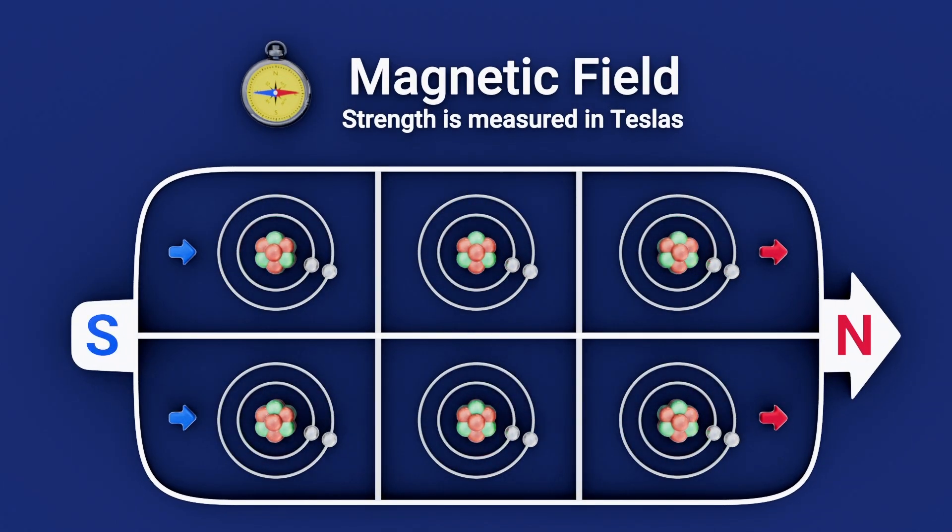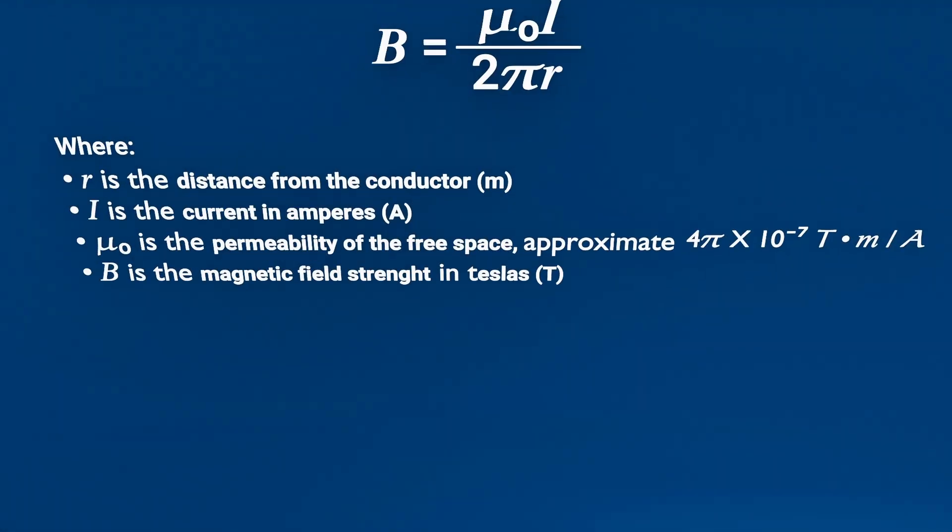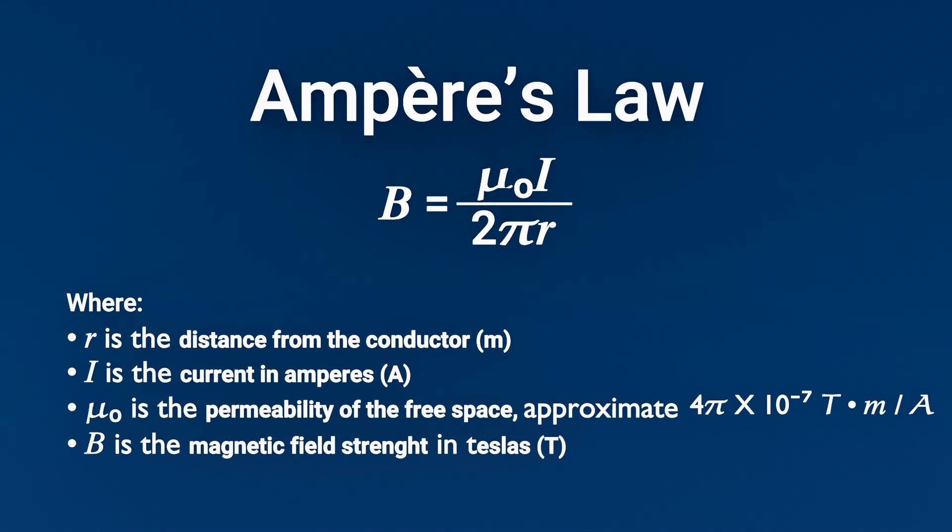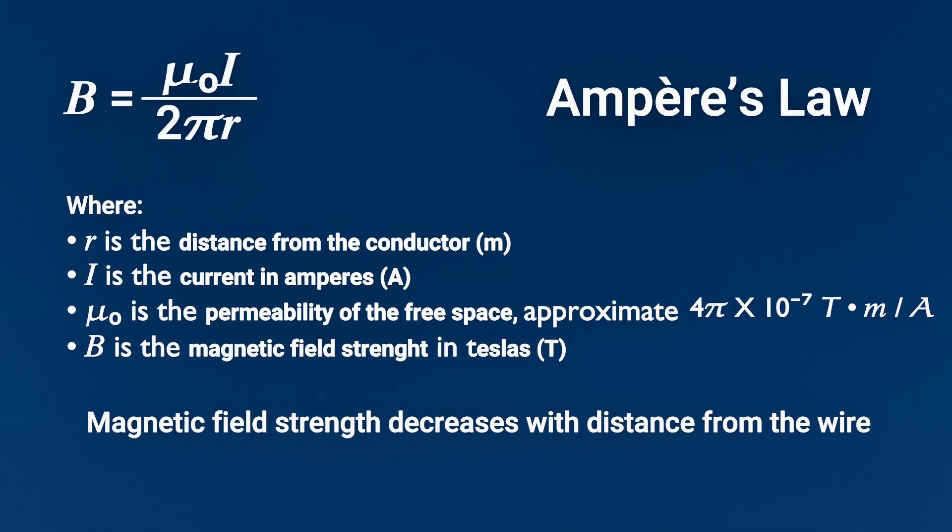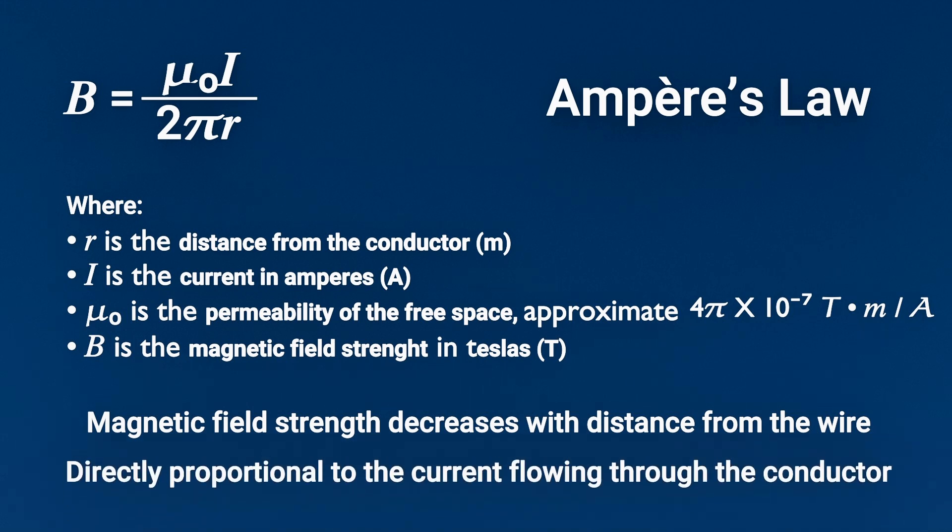The strength of the magnetic field is measured in teslas, and is directly related to the source of the magnetic field. For a long straight conductor carrying current, the magnetic field at a distance from the wire can be calculated using Ampere's law. This equation tells us that the magnetic field strength decreases with distance from the wire, and is directly proportional to the current flowing through the conductor.